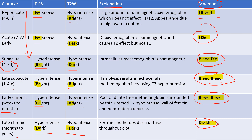You can go through the explanation table by pausing the video for your reference, but you have to rely on this mnemonic. To summarize: hyperacute (4–6 hours) — 'I BLEED'; acute (7–72 hours) — 'I DIE'; subacute (4–7 days) — 'BLEED DIE'; late subacute and early chronic — 'BLEED BLEED' (bright bright); late chronic (months to years) — 'DIE DIE' (dark dark).